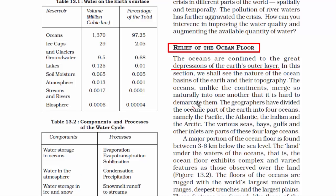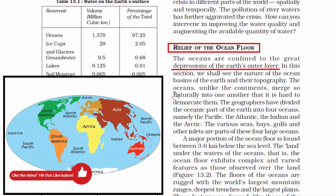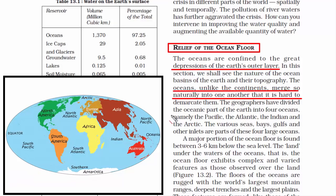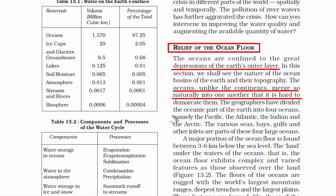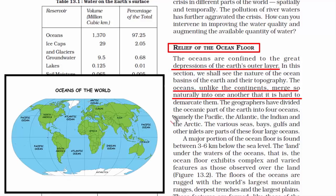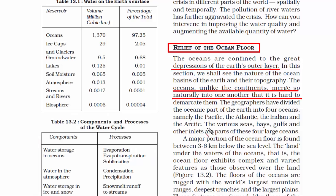Wherever there is a depression, water gets accumulated — that's how oceans are formed. If you look at the world map, continents are not necessarily merged with each other, but oceans naturally merge into one another. We cannot create a clear boundary between oceans, but for studying purposes, geographers have divided the oceanic part of the Earth into four oceans: Pacific, Atlantic, Indian, and Arctic.